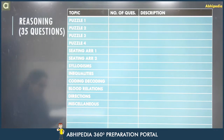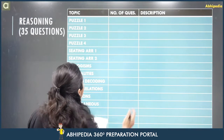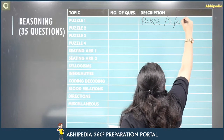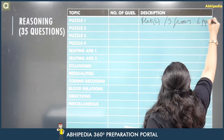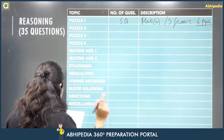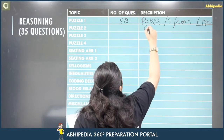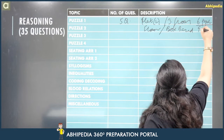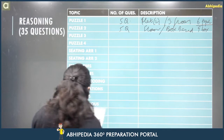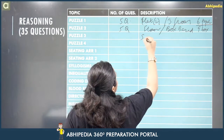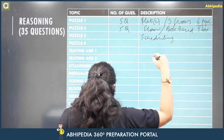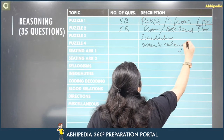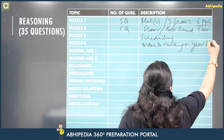In the reasoning section, puzzle one was a floor-based puzzle with two flats and three floors, and six people — five questions. The second puzzle was a box-based puzzle with nine boxes — five questions. Then there was a scheduling puzzle, which was mixed with an order and ranking concept — year-based — so two concepts were combined in these puzzles, five questions each.